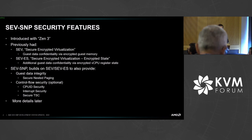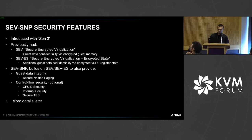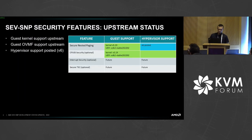There are some additional security features that fall under the SNP umbrella. These mostly relate to control flow security, things like CPUID security — when you issue CPUID instructions in the guest, those are generally emulated by the hypervisor, and in some cases guest code might rely on well-defined behavior. There are features to guard against assumptions being broken, as well as interrupt security and secure TSC.